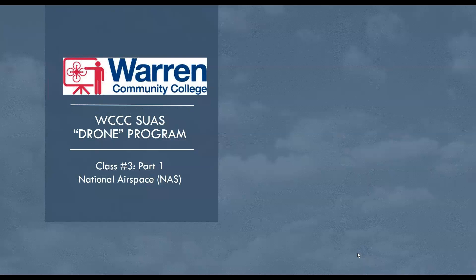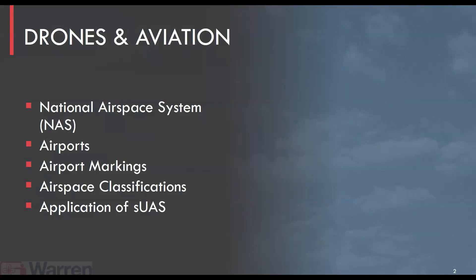Hello and welcome to the Warren County Community College SUAS drone program session. This is class three, part one. This session is on the national airspace system — the national airspace over the United States of America. Throughout class three, in multiple parts, we will go through the NAS, or national airspace system, airports and airport markings, airspace classifications, and perhaps even some application of small unmanned aircraft systems.